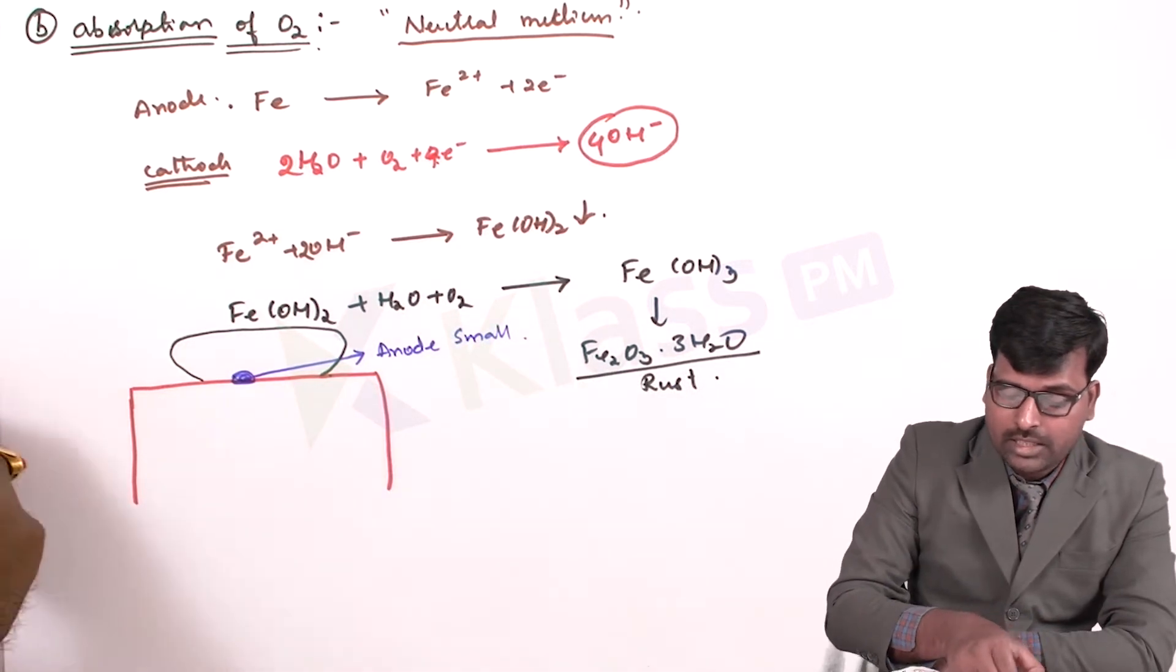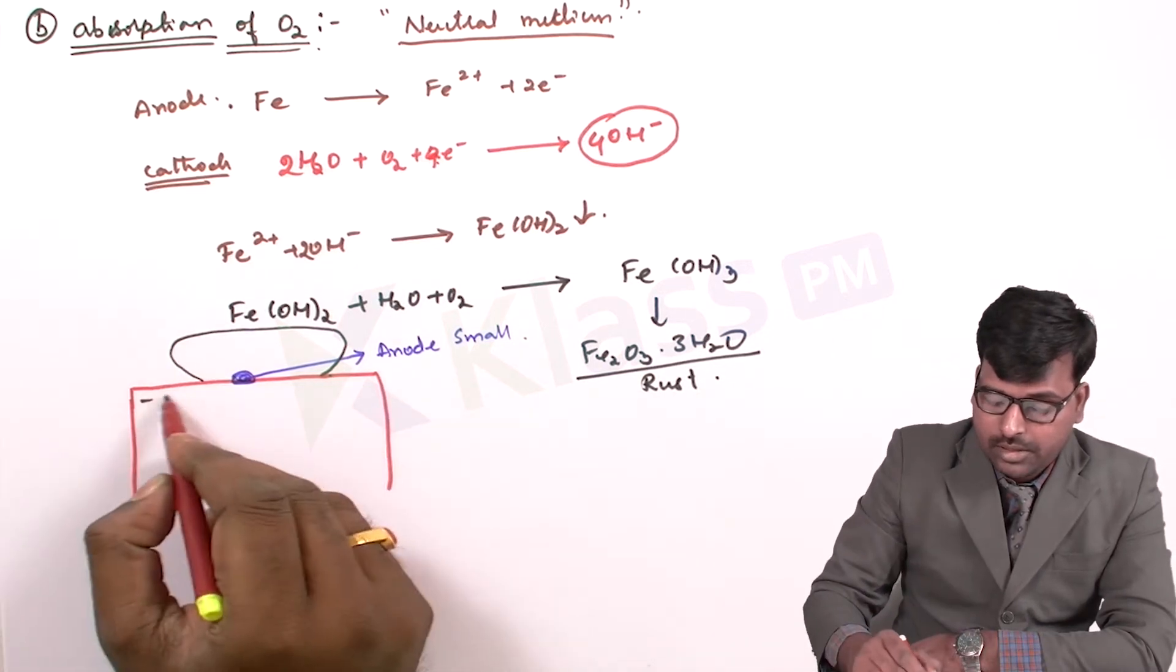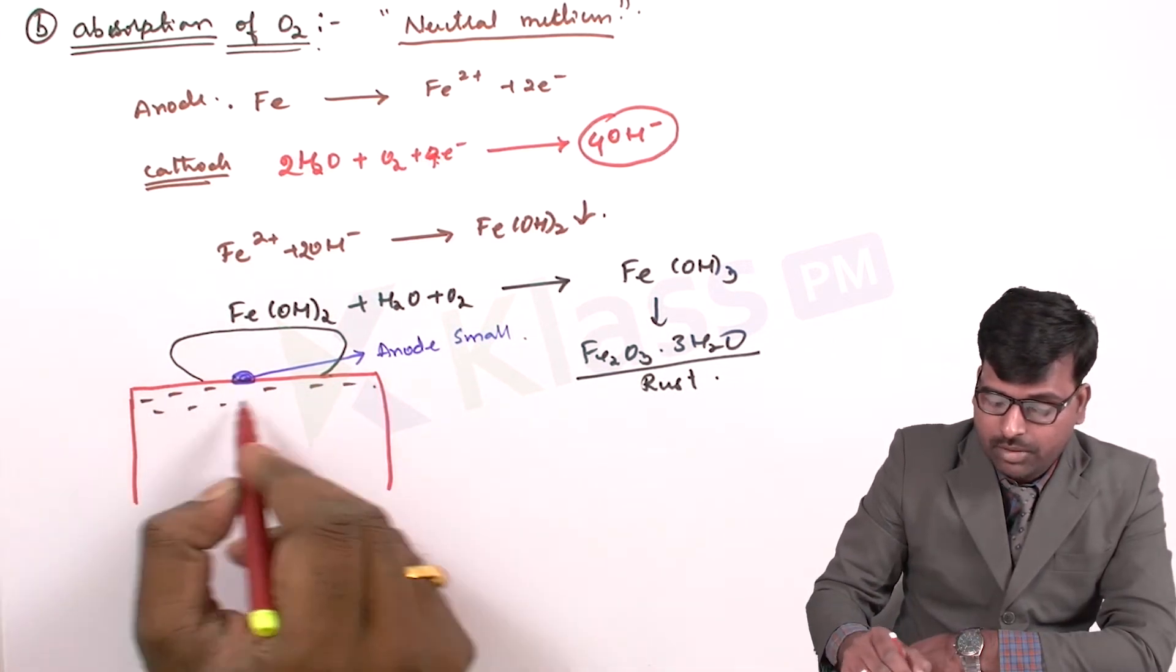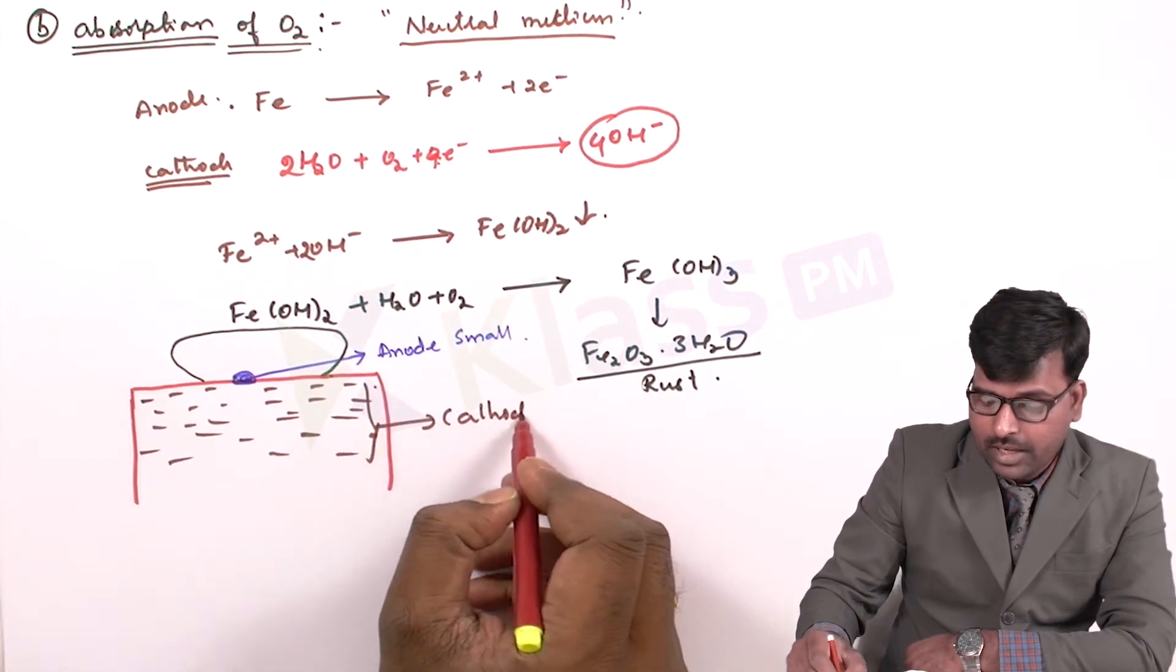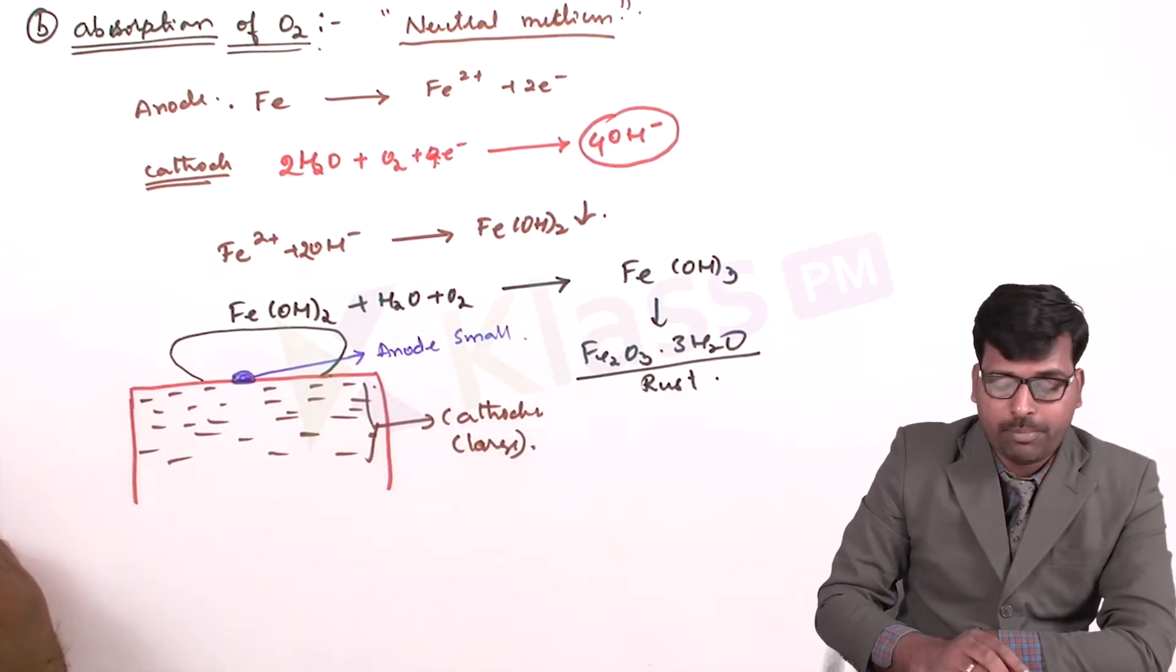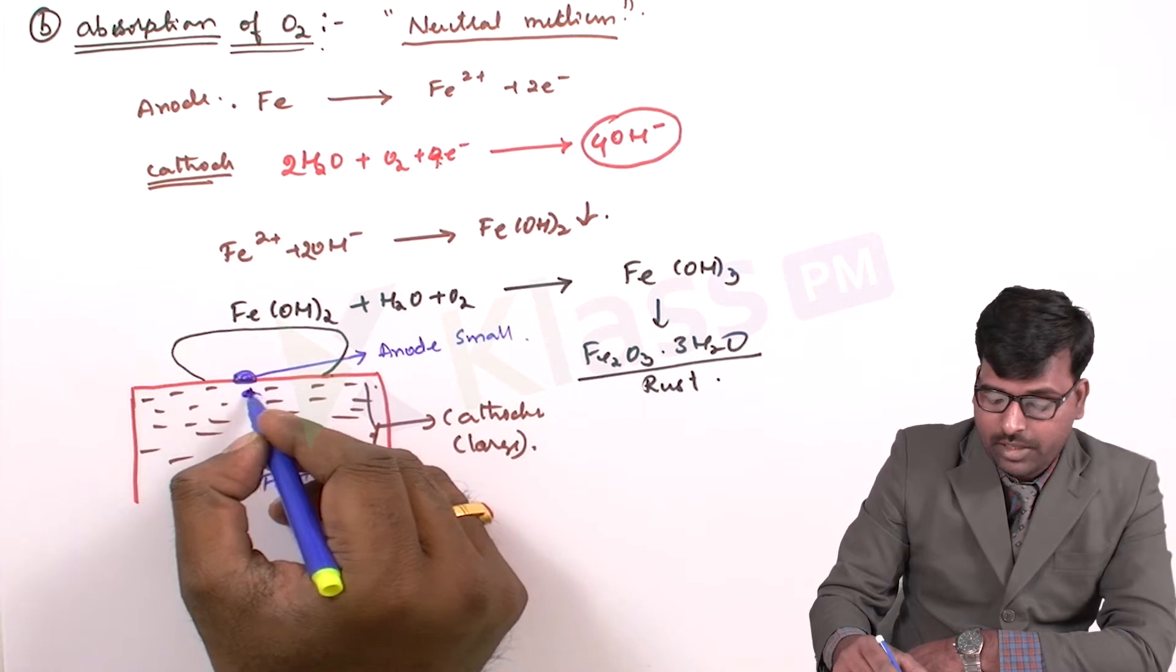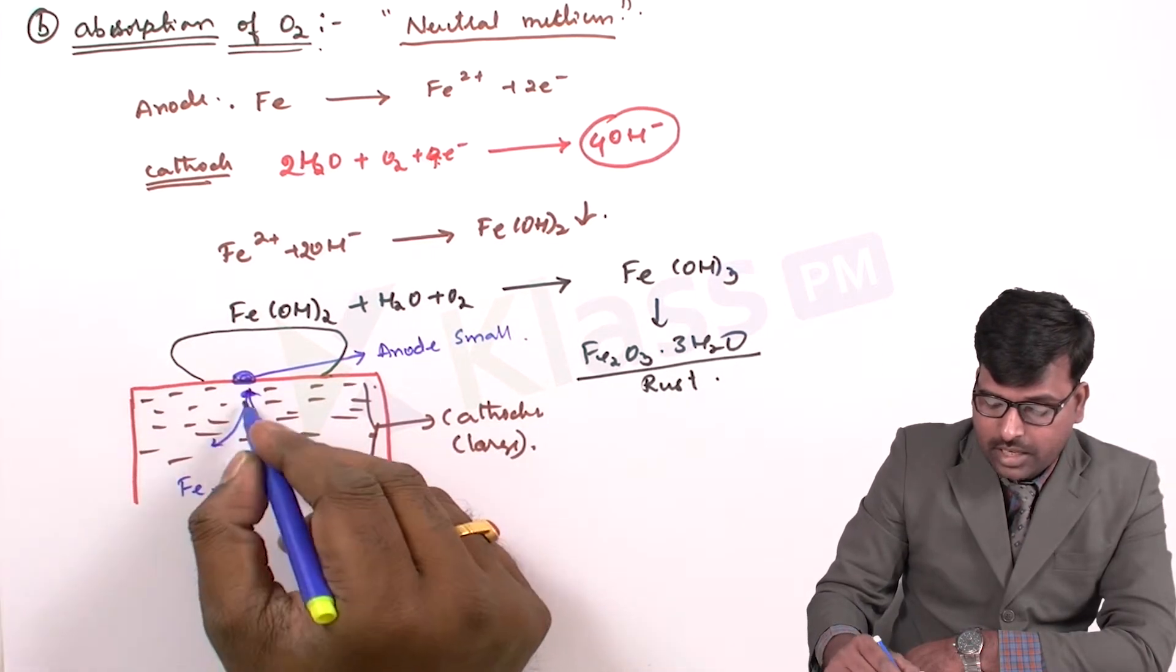And all the other surrounding area is cathode. So this surrounding area, the brown color will be the cathodic area. Cathodic area will be large. So this reaction is formed at anode and it will try to go to the surrounding areas.